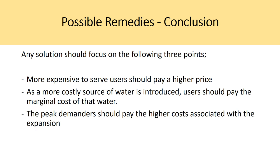Overall, any solution should focus on three key points: more expensive-to-serve users should pay a higher price; when a more costly source of water is introduced, users should pay the marginal cost of that water; and peak demanders should pay the higher costs associated with expansion. Water pricing is really the most important aspect and probably the most valuable solution when talking about water scarcity.